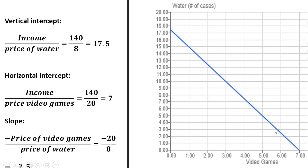Then we just connect those two points, and we have Toby's budget constraint. The slope of the budget constraint can be thought of as minus the price of video games over the price of water — minus the price of the thing measured on the x-axis divided by the price of the thing measured on the y-axis. The price of video games is $20 and the price of water is $8, so the slope is minus 2.5.